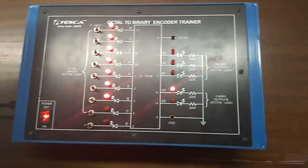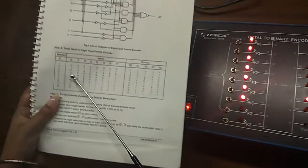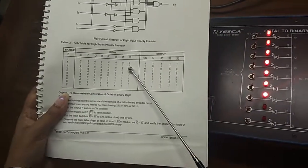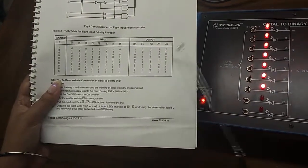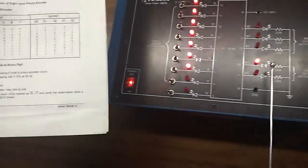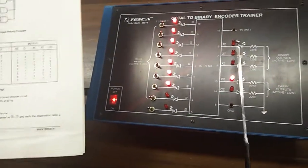You can see in truth table it is showing that for this the output will be 0 1 0 0 0 and we can see here our output is 0 1 0 0 0.